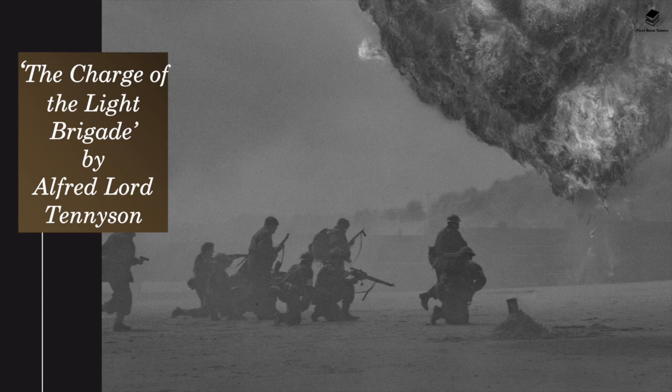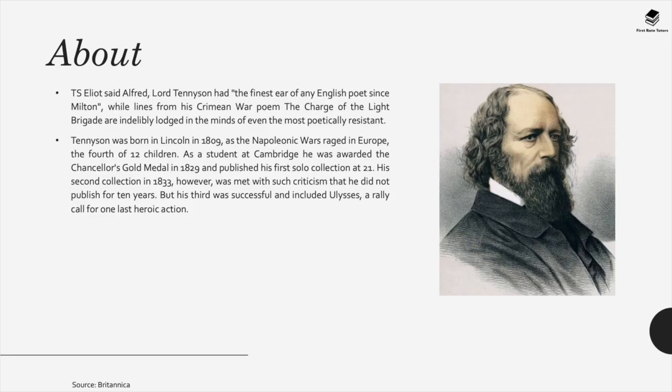The next poem is The Charge of the Light Brigade by Alfred Lord Tennyson. T. S. Eliot described Tennyson as 'the finest ear of any English poet since Milton.' Tennyson wrote about the Crimean War in this poem, crystallising the memory of this particular conflict. He was a Victorian writer born in 1809 as the Napoleonic Wars raged in Europe — a very successful poet from the upper-class elite with a keen interest in different wars, especially the Crimean War.